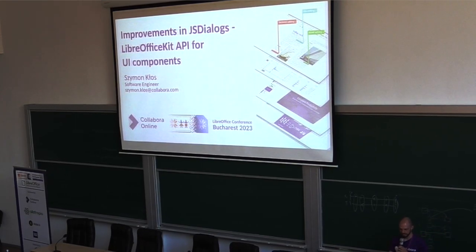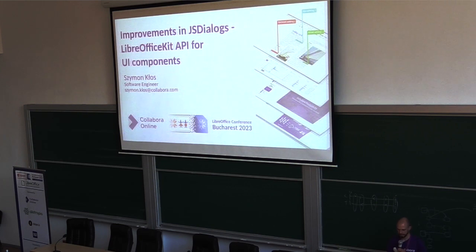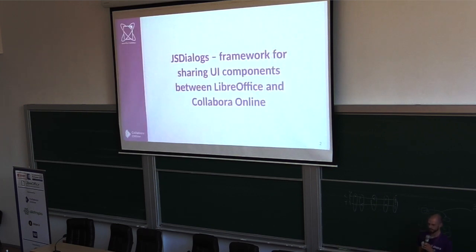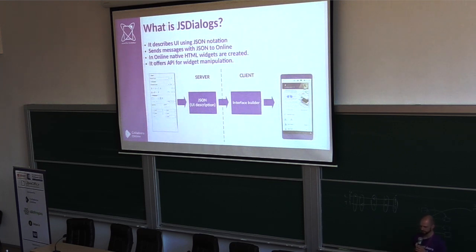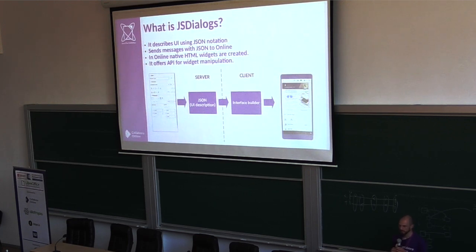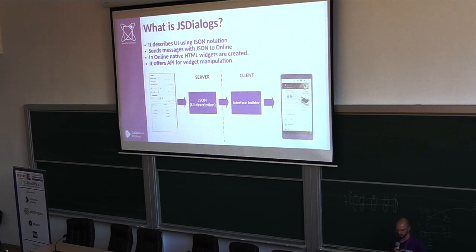Hello, my name is Szymon Kwas and in this presentation I would like to show recent improvements in JS Dialogs since the last conference. For those who don't know what JS Dialog is, it's a framework for sharing UI components between LibreOffice and Colabora Online. The idea is simple: we take a component like a dialog and describe the structure of widgets using JSON notation, which we send to the client browser where we build a native user interface from that. We also send events after user interaction to the server to get the correct results.